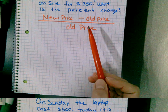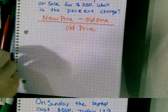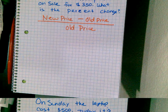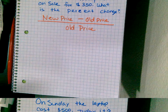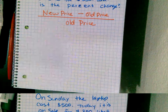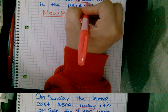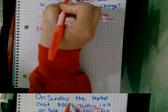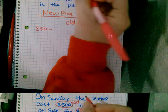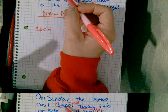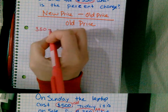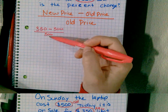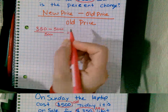Take your new price minus your old price and divide by your old price — that gives you a decimal which you'll turn into a percent. What's our new price? Our new price is $350. We use English skills: present versus past tense. Today is $350 — that's the new price. On Sunday is past tense — that's the old price, $500. So: 350 minus 500, divided by 500. Be careful not to put the new price in the denominator.